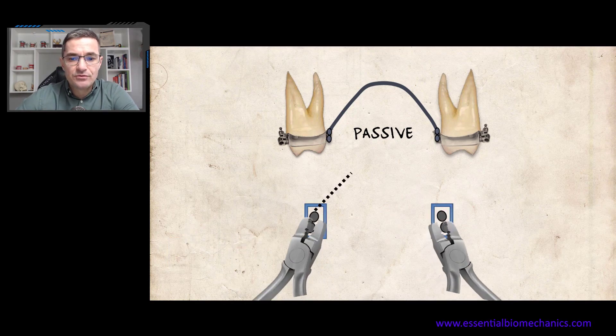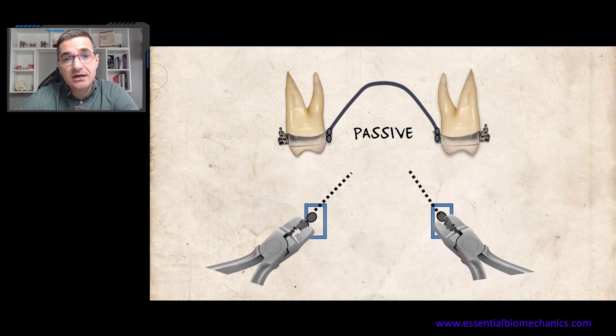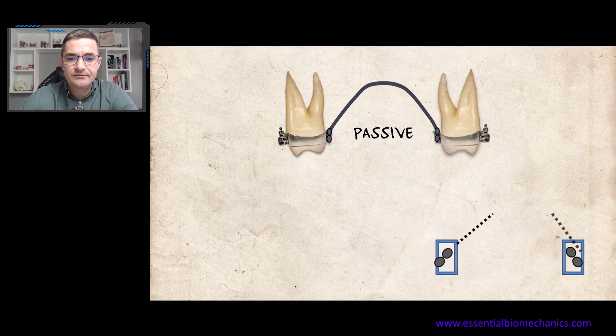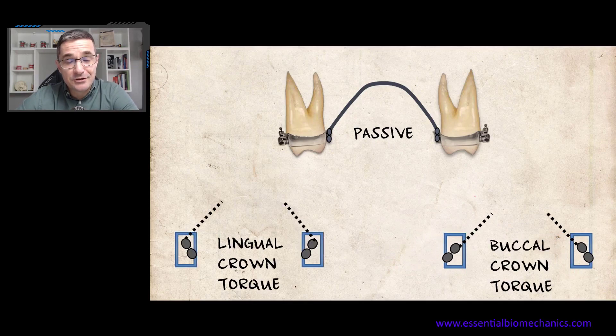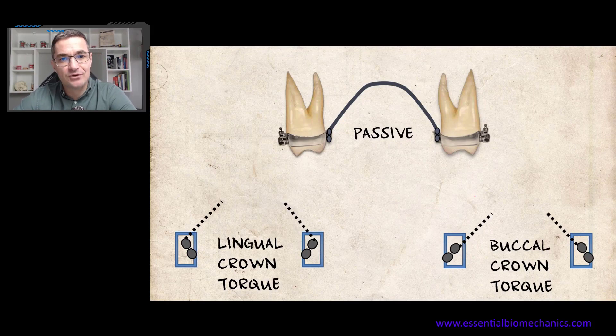Now let's suppose we are applying a buccal crown torque — it's a different situation. Our two options are to apply lingual crown torques or buccal crown torques. It's important to point out that in both situations, the application of third-order bends in the transpalatal arch will automatically produce transversal forces. This is the association of forces and moments with this appliance.